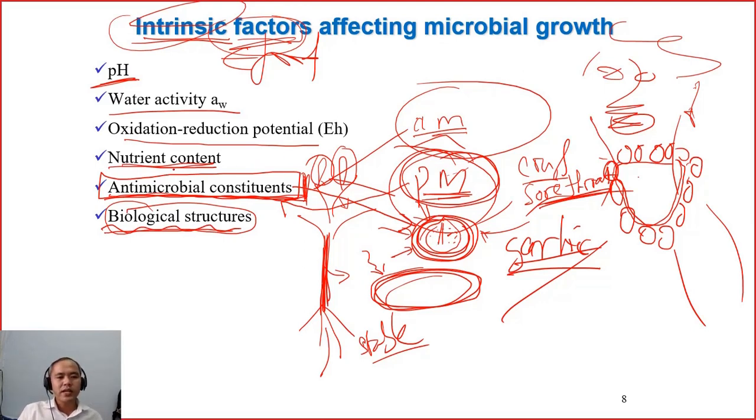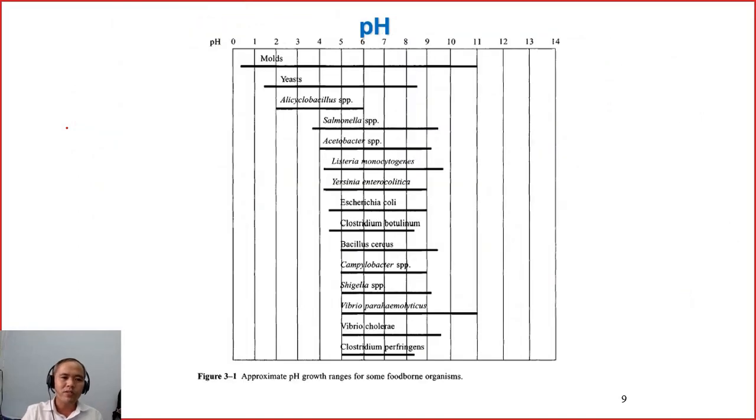Right, so nutrient content - if the food has more nutrients for humans, then also more nutrients for microorganisms to grow. Milk is actually very rich in nutrients, so if milk has a high number of microorganisms, then it will be spoiled soon, because it gives a lot of nutrients, bacteria will grow very fast. And then for these three factors, we discuss one by one, because they are more important.